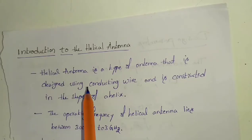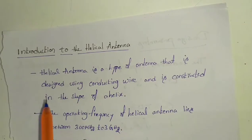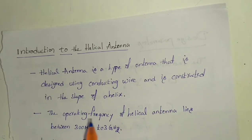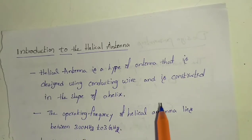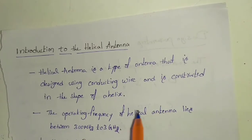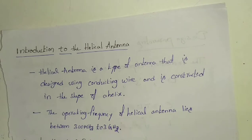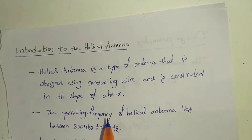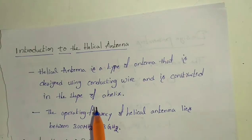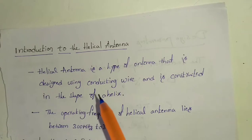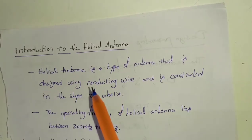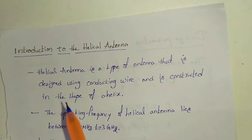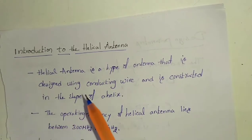Finally we will discuss the applications of helical antenna. Helical antenna is a type of antenna that is designed using conducting wire and it is constructed in the shape of a helix. If the helical antenna is constructed using one conducting wire, it is called monofiller. By using two or more conducting wires, it is called bi-filler or quad-filler.